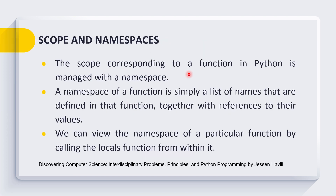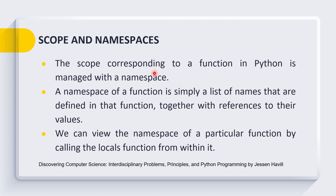The scope corresponding to a function in Python is managed with namespace. The namespace of a function is simply a list of names that are defined in that function, together with references to their values. We can view the namespaces of a particular function by calling the built-in function named locals. We will use locals in this session to explain the concept of namespaces and to understand the concept of scope of variables.